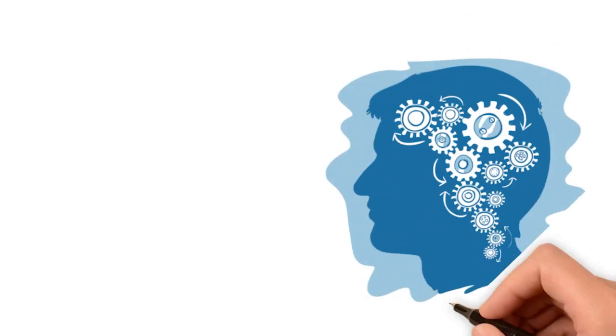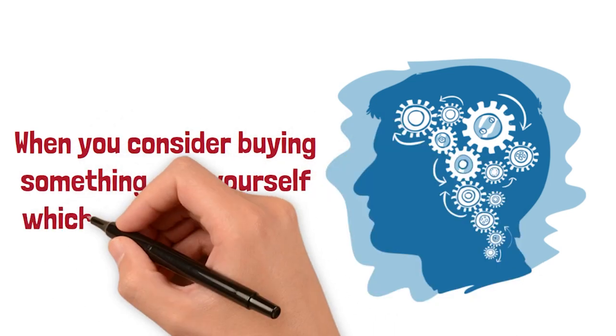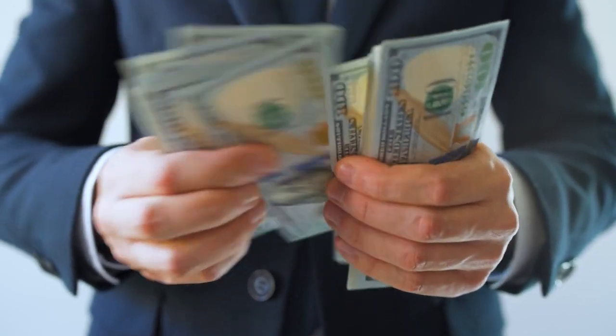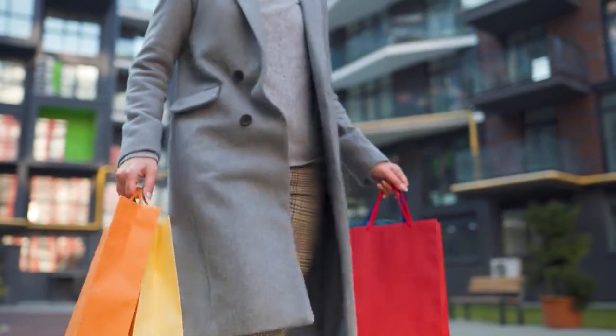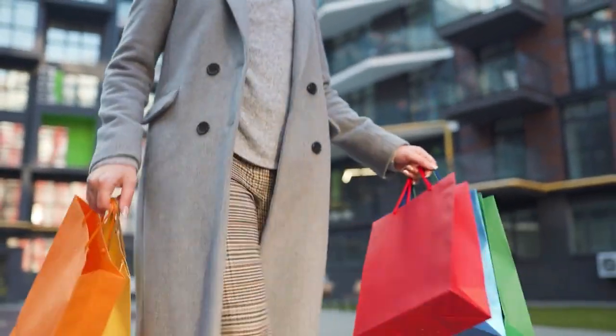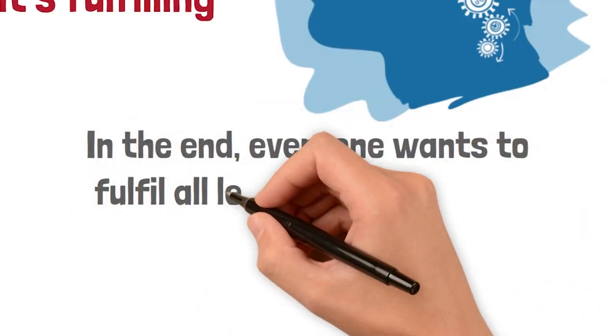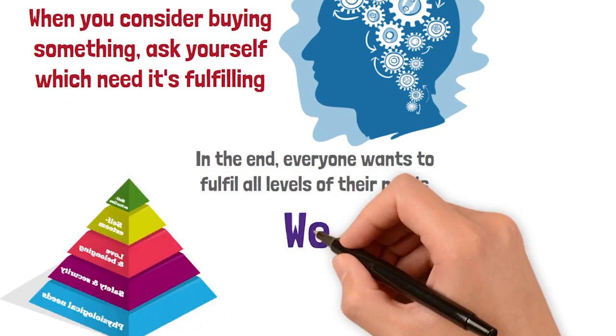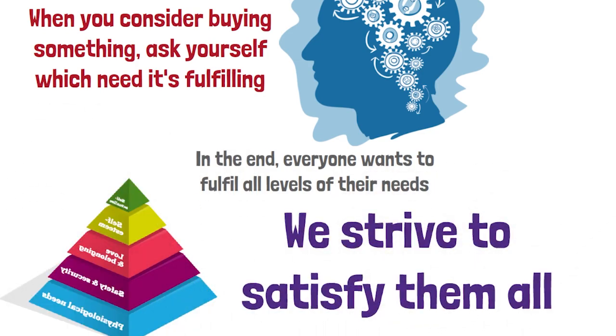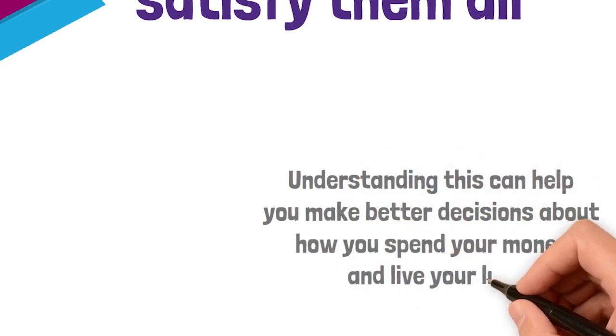Think about it in terms of spending money. When you consider buying something, ask yourself which need it's fulfilling. Are you trying to satisfy a higher need at the expense of a lower one? Are there cheaper options that can fulfill the same need? Is it fulfilling the need you think it is? In the end, everyone wants to fulfill all levels of their needs. The lower ones are more important, but deep down, we strive to satisfy them all.